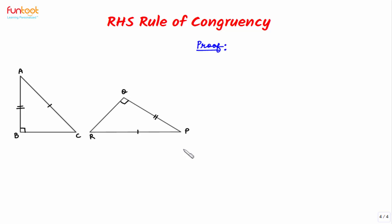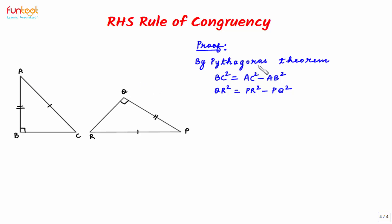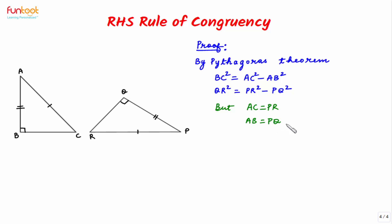Let's see a simple proof of RHS rule of congruency. By application of Pythagoras theorem in right triangle ABC, BC² = AC² − AB². And in right triangle PQR, QR² = PR² − PQ². Since AC = PR and AB = PQ are given, this implies that BC = QR.